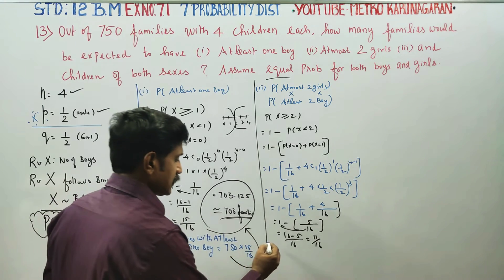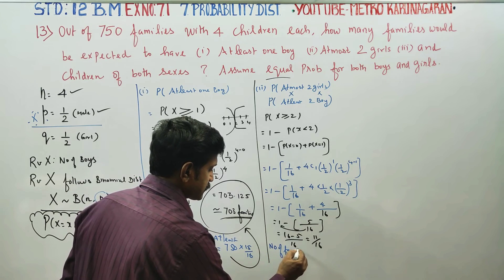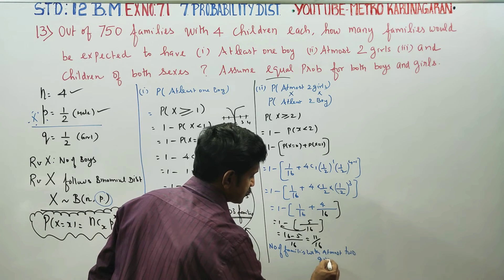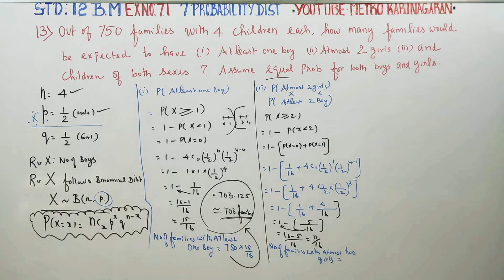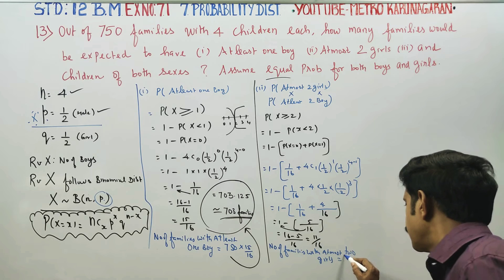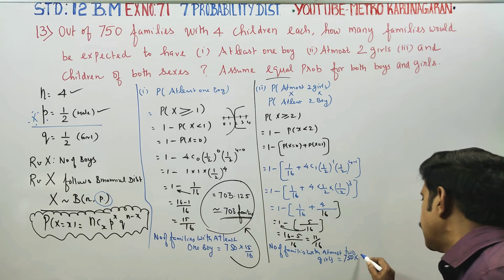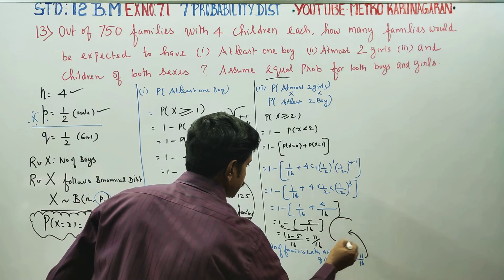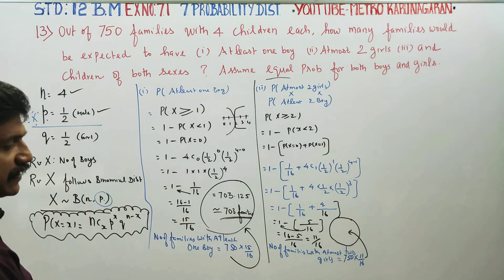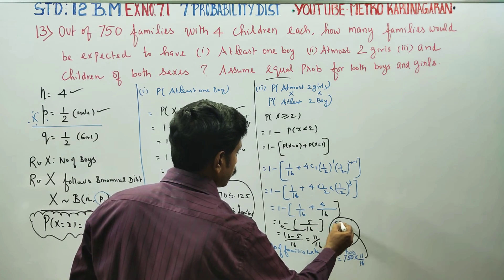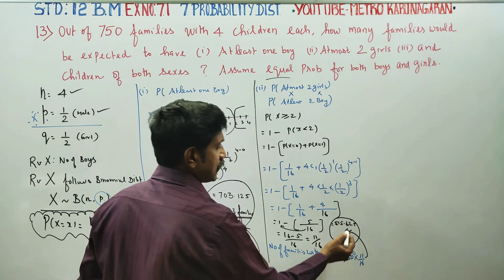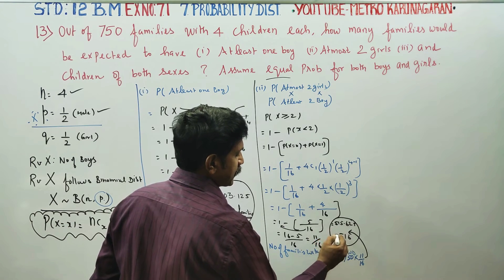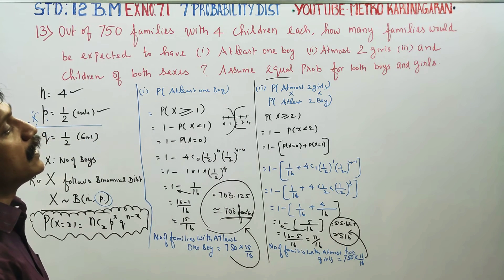Number of families with at most 2 girls equals 750 × 11/16. Multiplying: 750 × 11/16 = 515.625, which rounds to approximately 516 families.